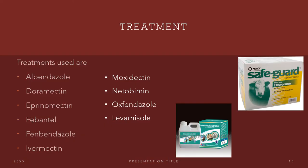Lastly, let's talk about the preventative measures and treatment. They go hand in hand — you will have to give treatments to your cattle in order for this not to happen. The treatments commonly used are albendazole, doramectin, eprinomectin, febantel, fenbendazole, ivermectin, moxidectin, netobimin, oxfendazole, and levamisole.